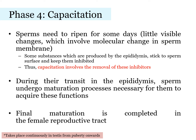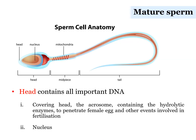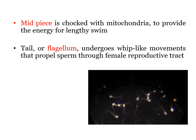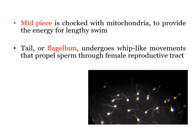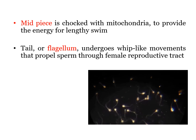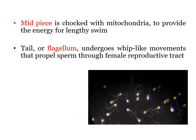That concludes the four phases of spermatogenesis. Let's take a quick look at how a mature sperm looks. There are three major parts of a mature sperm: the head, midpiece, and tail. The head contains all important DNA and consists of the acrosome, which is the covering of the head, and the nucleus. The midpiece is packed with mitochondria as a source of energy for swimming. The tail, also known as the flagellum, aids the sperm in swimming with a whip-like movement.